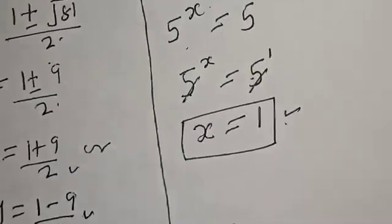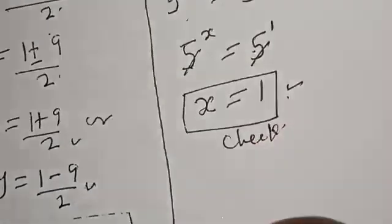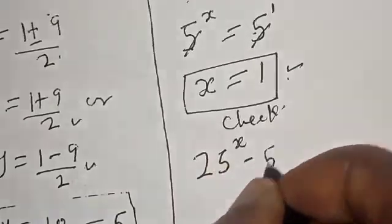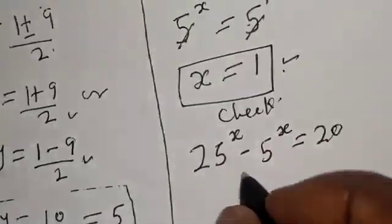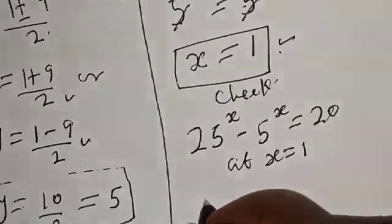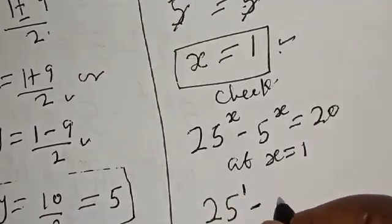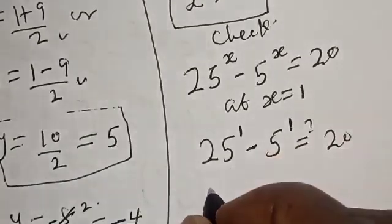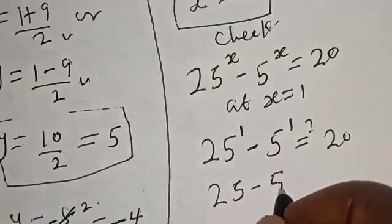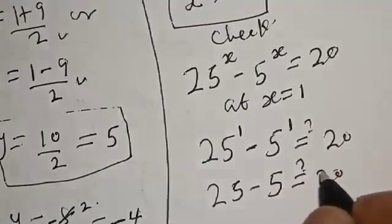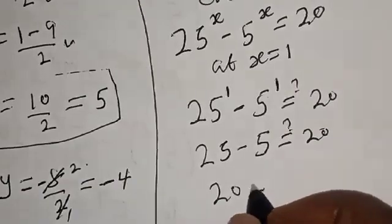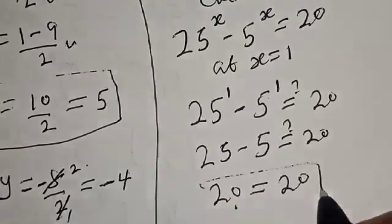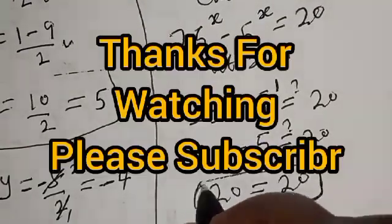Let us check to confirm our answer. We have the given equation: 25 raised to power x minus 5 raised to power x equals 20. At x equals 1: 25 raised to power 1 minus 5 raised to power 1 must equal 20. That gives us 25 minus 5 equals 20. We satisfy the given equation at x equals 1. If you have enjoyed the class, please don't forget to like, share, comment and subscribe. Thank you.